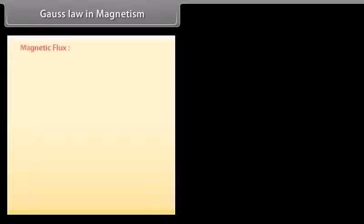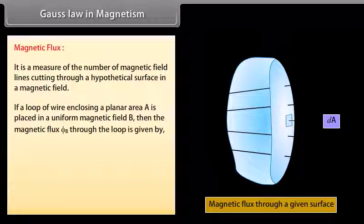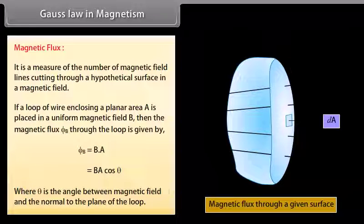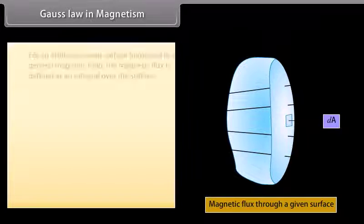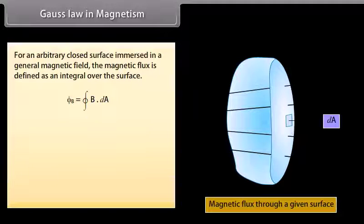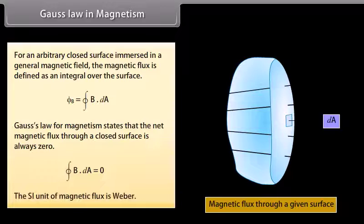Gauss's Law in Magnetism — Magnetic Flux: Magnetic flux is a measure of the number of magnetic field lines cutting through a hypothetical surface in a magnetic field. If a loop of wire enclosing a planar area A is placed in a uniform magnetic field B, then the magnetic flux phi_B through the loop is given by the dot product of B and A, which equals BA cos theta, where theta is the angle between the magnetic field and the normal to the plane of the loop. For an arbitrary closed surface, phi_B equals the closed integral of B dot dA. Gauss's Law of Magnetism states that the net magnetic flux through a closed surface is always zero. The SI unit of magnetic flux is Weber.